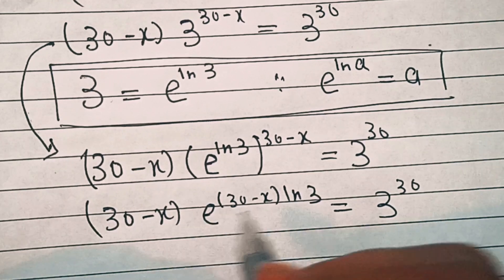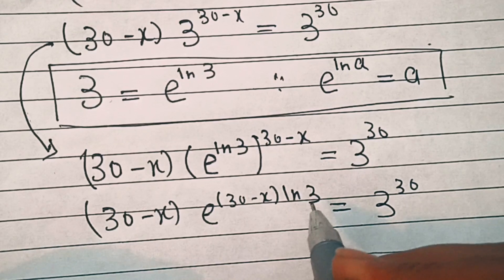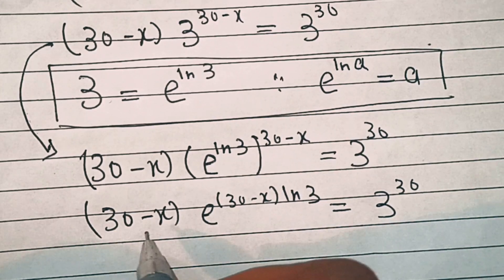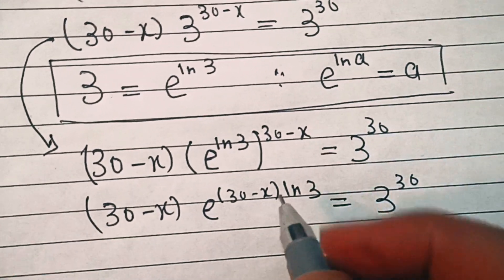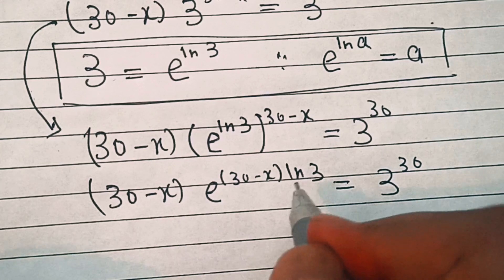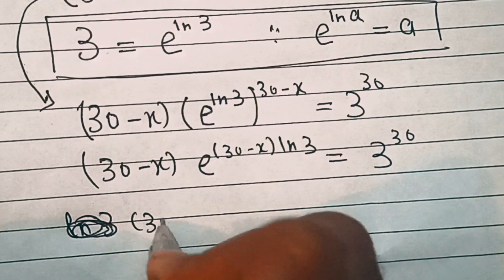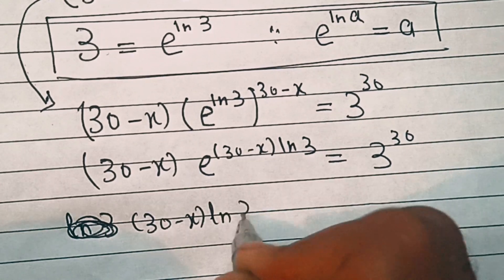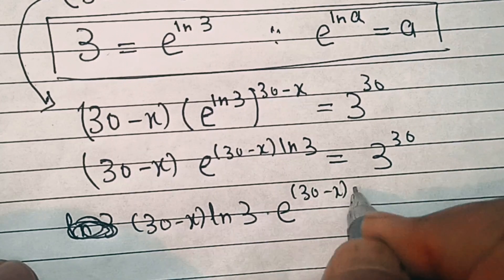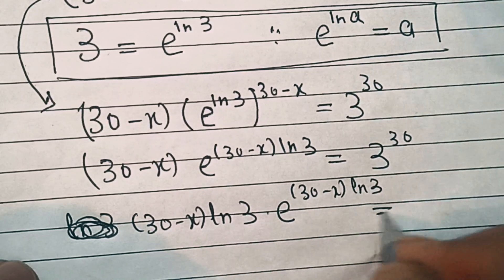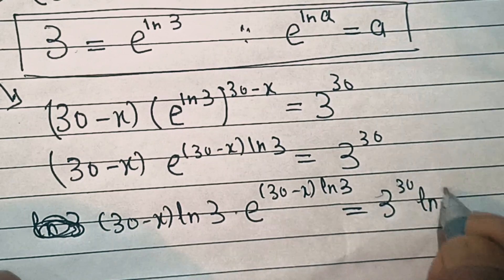Now here the exponent of e is 30 minus x into natural log of 3, and the coefficient is also 30 minus x. We'll make this coefficient the same as this exponent. So for that we'll multiply both sides by ln(3). We'll get 30 minus x into ln(3) into e power (30 minus x) ln(3) equal to 3 power 30 times natural log of 3.